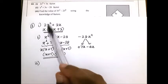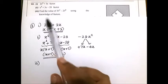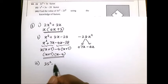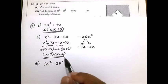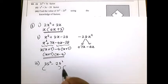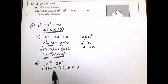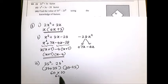Third part: find the value of 35² minus 25² using the knowledge of factors. This is the difference of two squares, so write the factors: (35 + 25)(35 − 25). 35 plus 25 is 60, 35 minus 25 is 10. 60 multiplied by 10 equals 600. This is the answer for the third part.